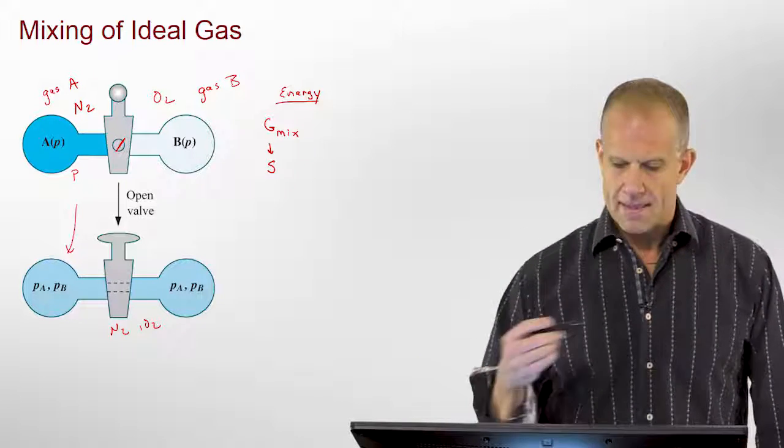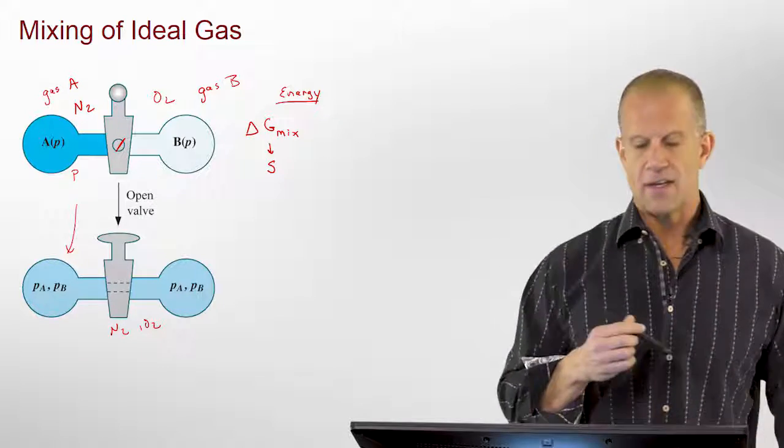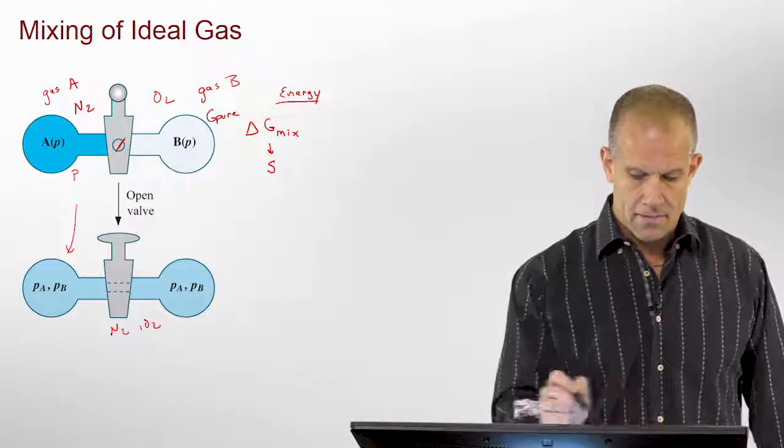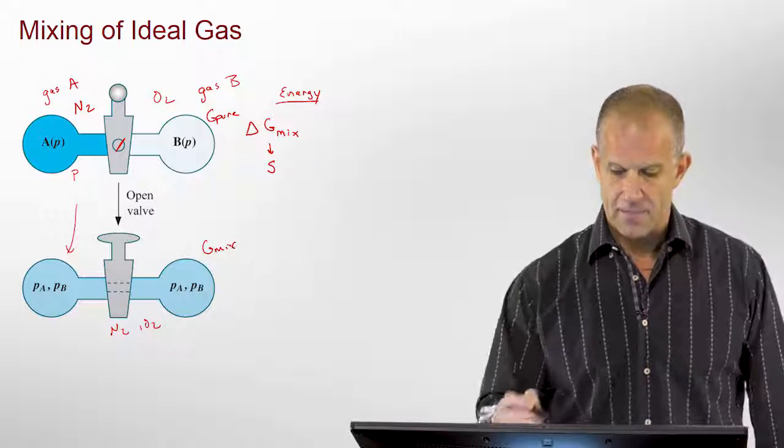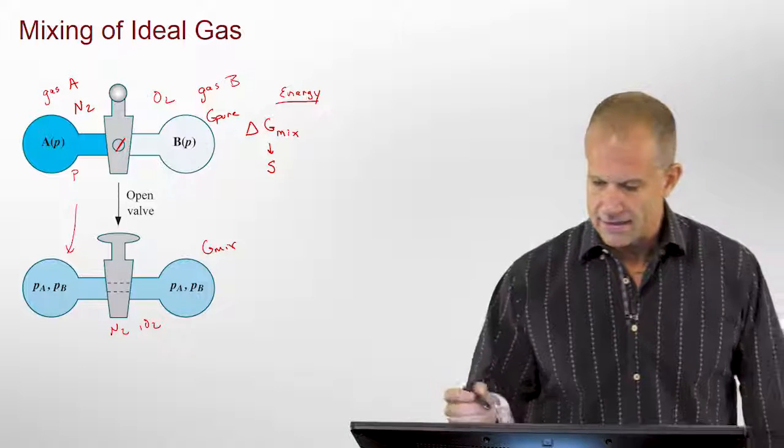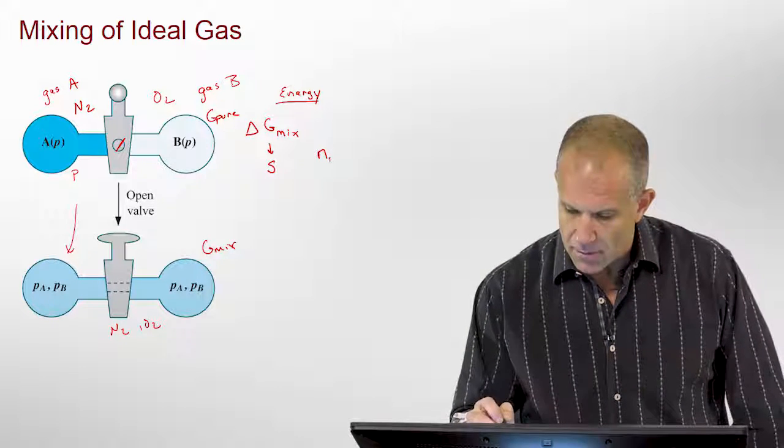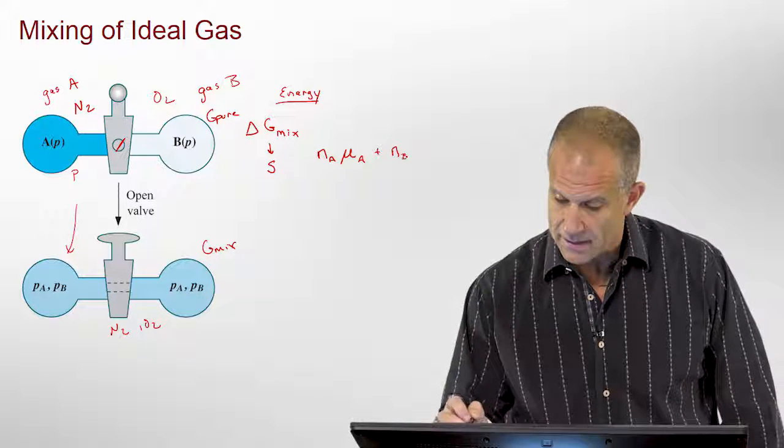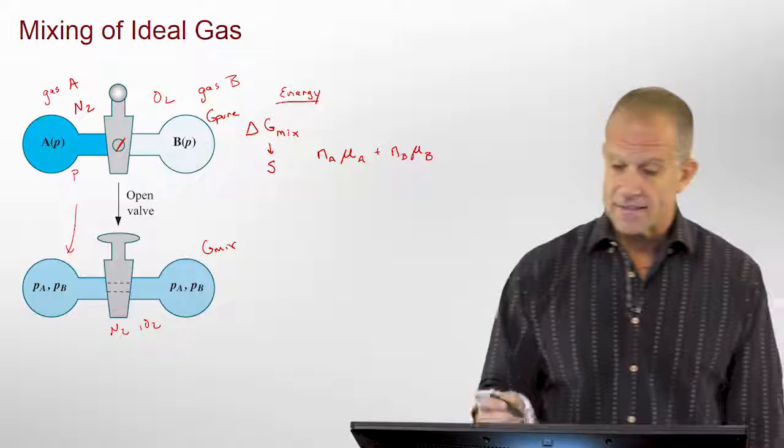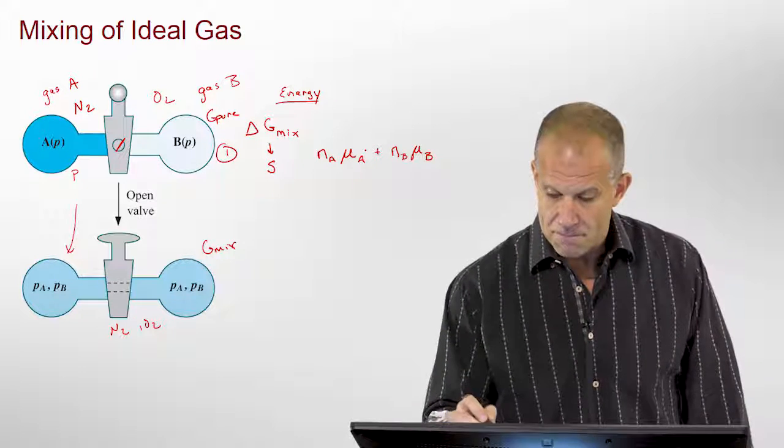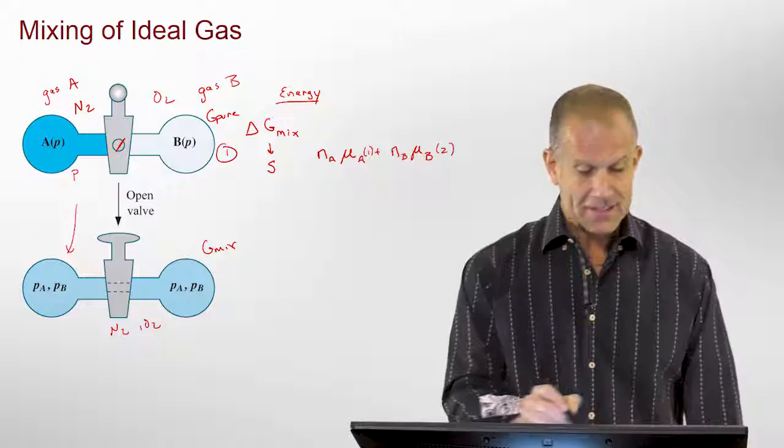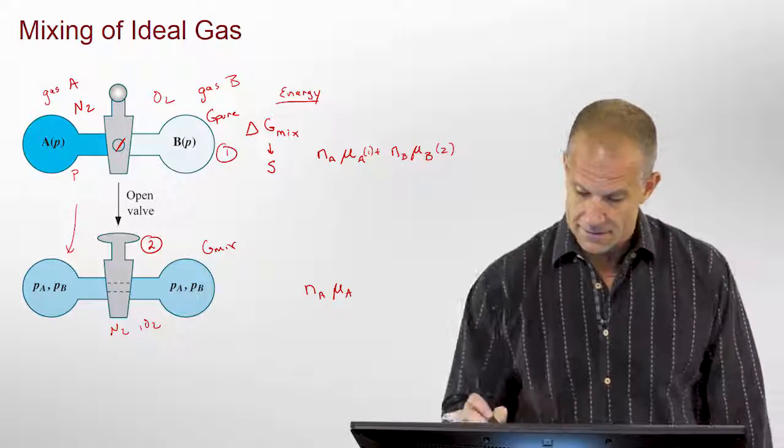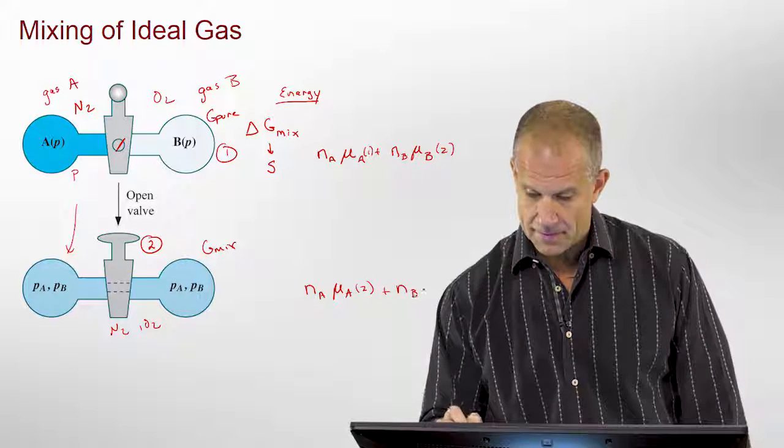We'll make a relationship to how the entropy changes of the system too. What we mean by the Gibbs free energy of mixing is the change in free energy starting with the pure each of the pure components, and this would be the final mixed component here. We would generally say that this is the number of moles of A times the chemical potential of A, plus the number of moles of B and its chemical potential of B.